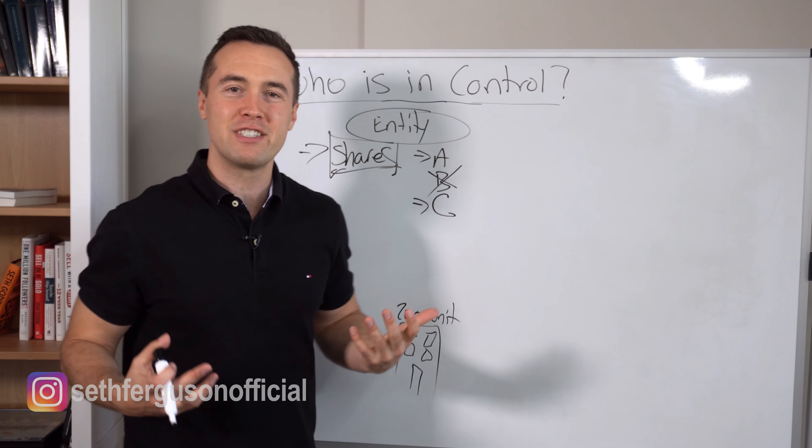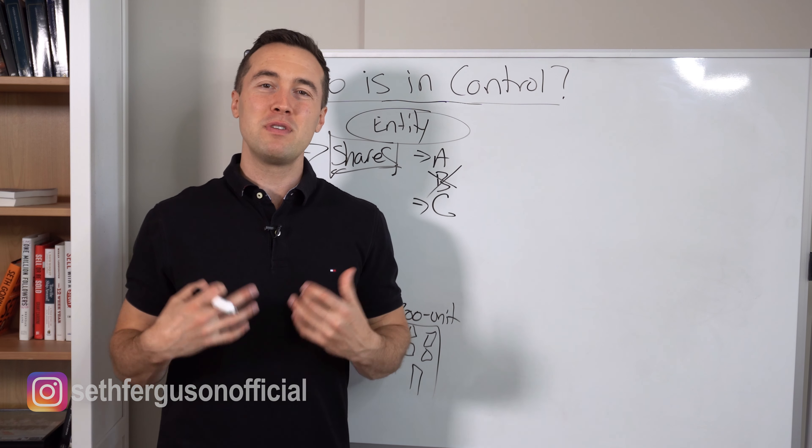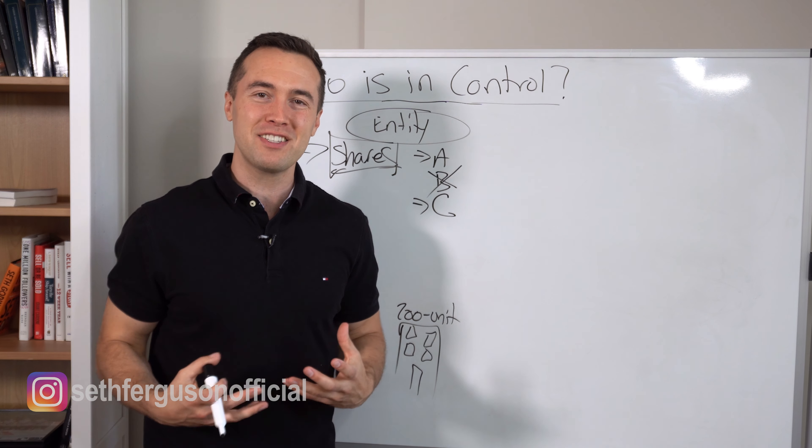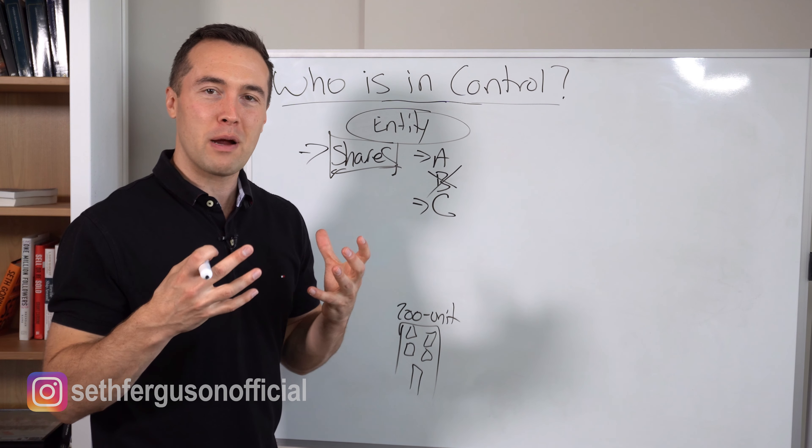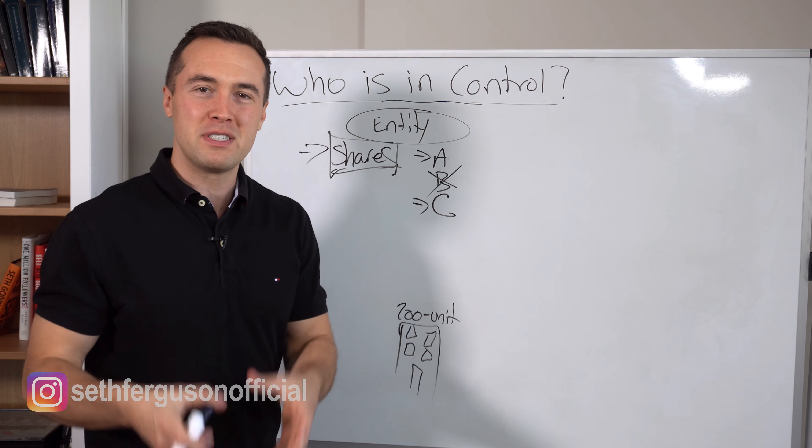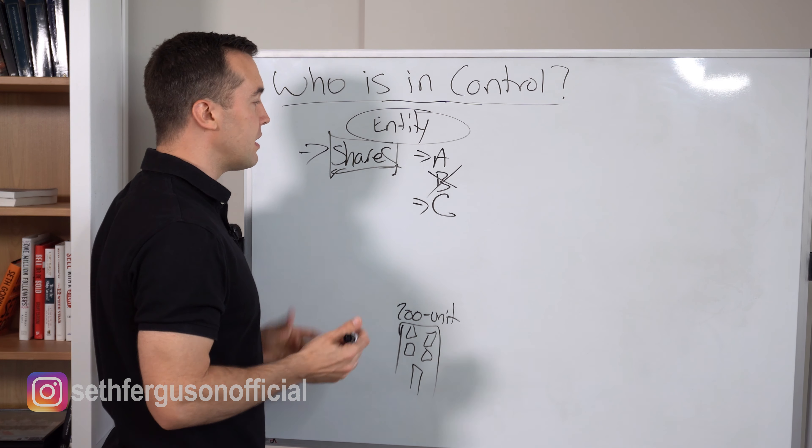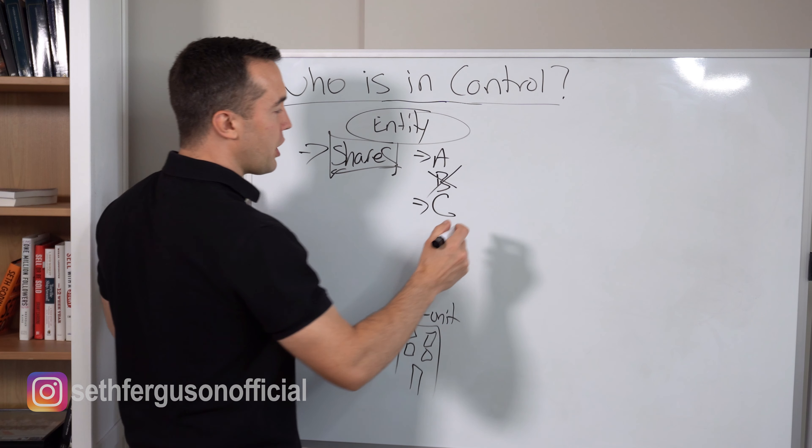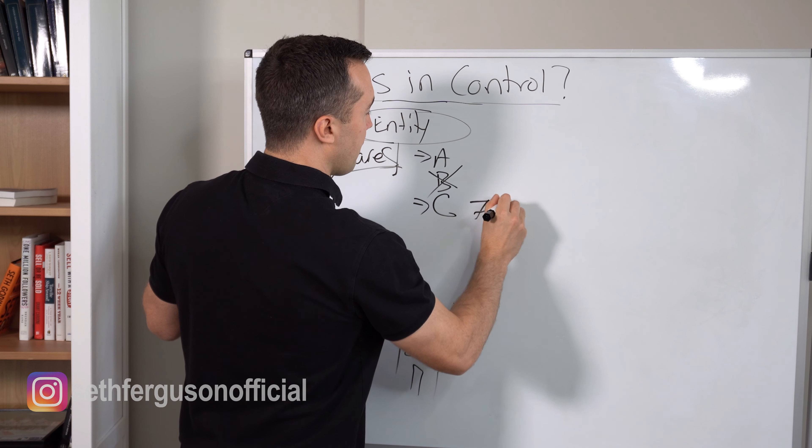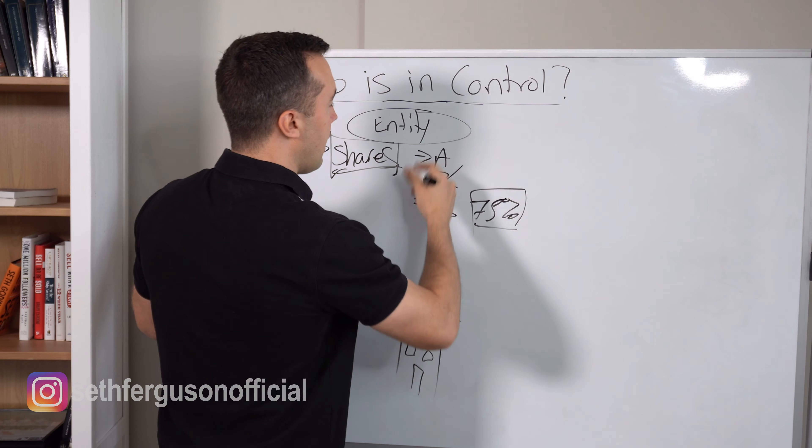You're probably asking yourself, well, why do we have different classes of shares? This is the beautiful thing about syndication. Because we are able to customize the structure of our entity to fit the specific investment need, this is how the sharing of profits is dictated.